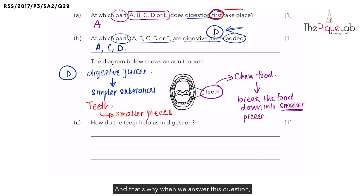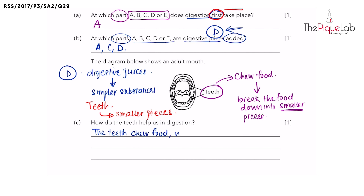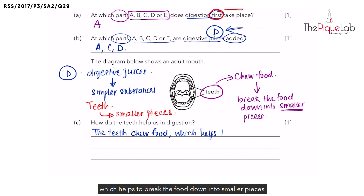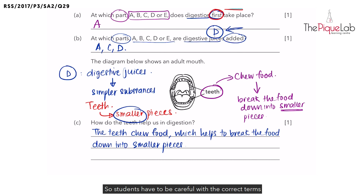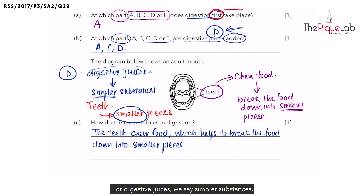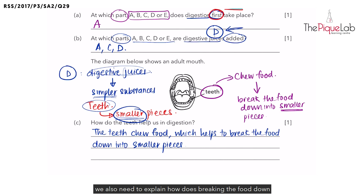When answering this question about teeth, we say the teeth chew food which helps to break the food down into smaller pieces. Students must be careful with the correct terms: for digestive juices we say 'simpler substances,' and for teeth we use 'smaller pieces.' But this is not a complete answer — we also need to explain how breaking the food down into smaller pieces helps us in digestion.